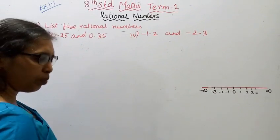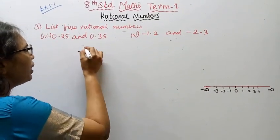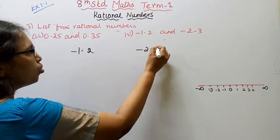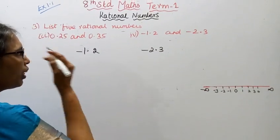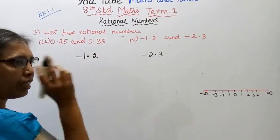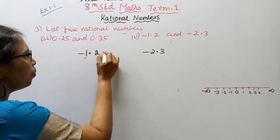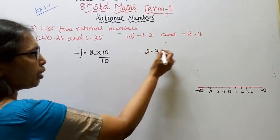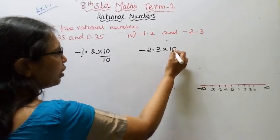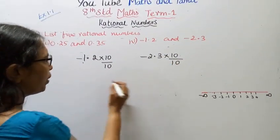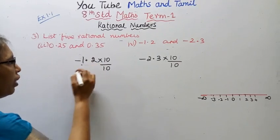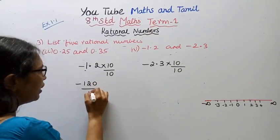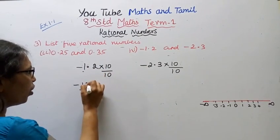Now for the next subdivision: find five rational numbers between minus 1.2 and minus 2.3. To convert these, we multiply by 10 and divide by 10. So minus 1.2 multiplied by 10 gives minus 12 by 10, with one decimal place.